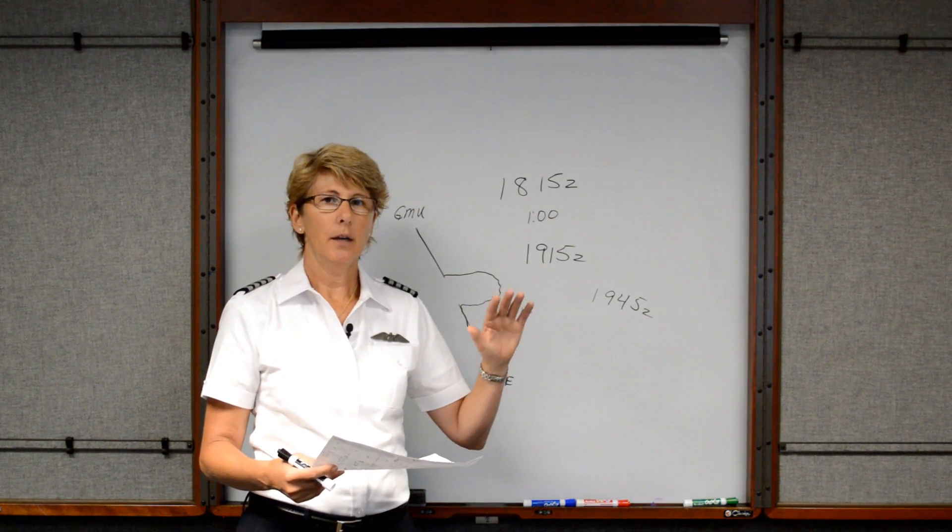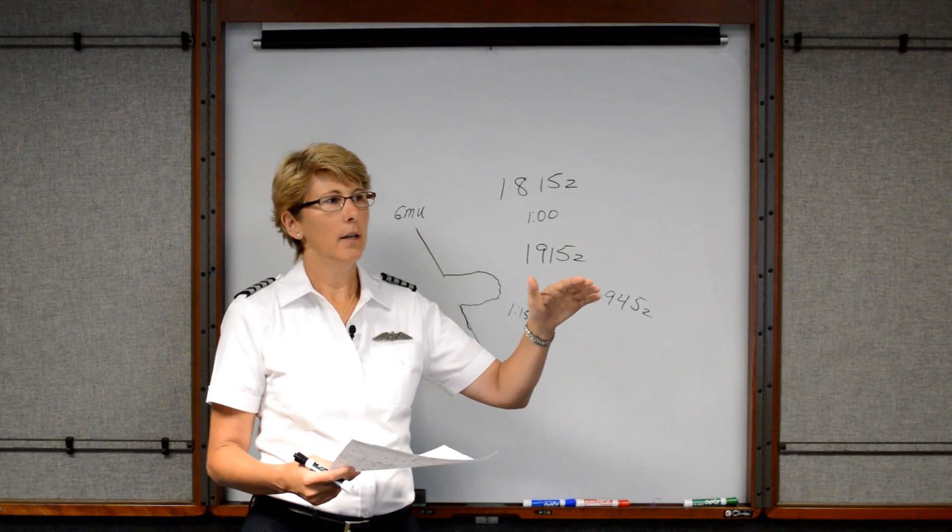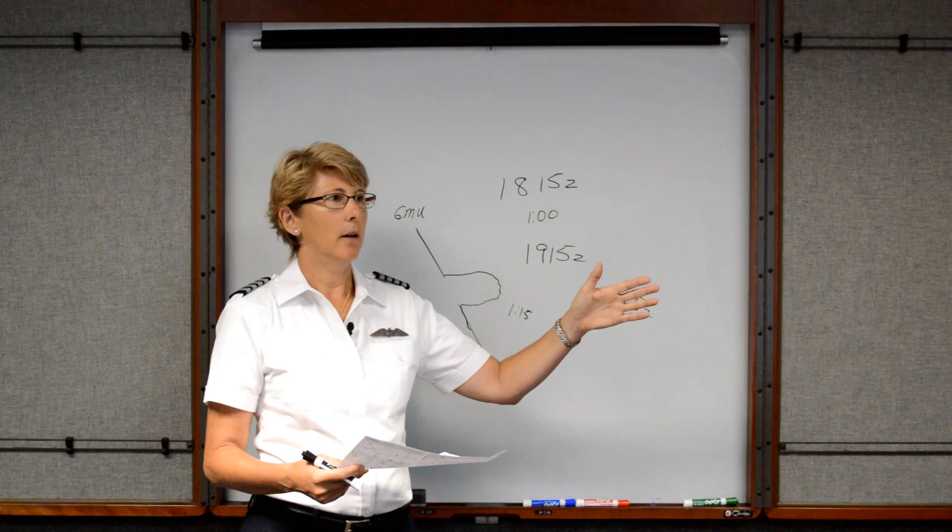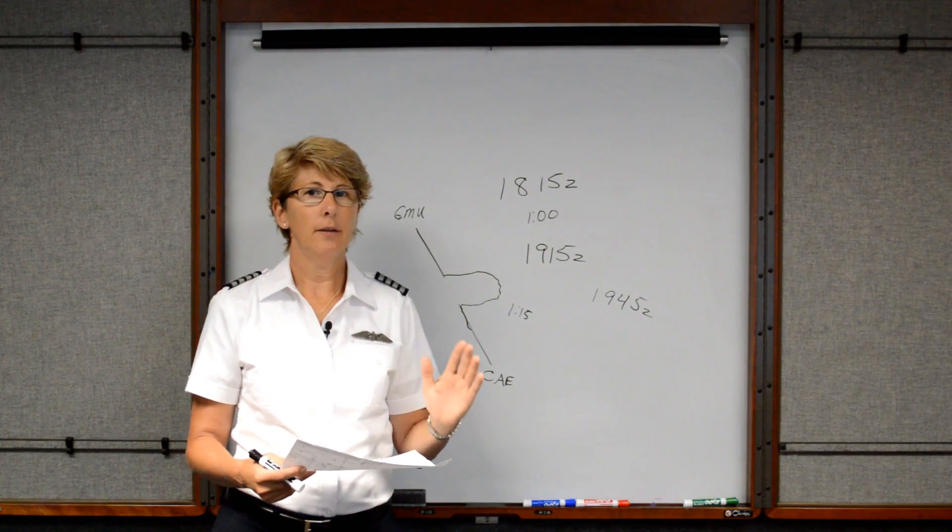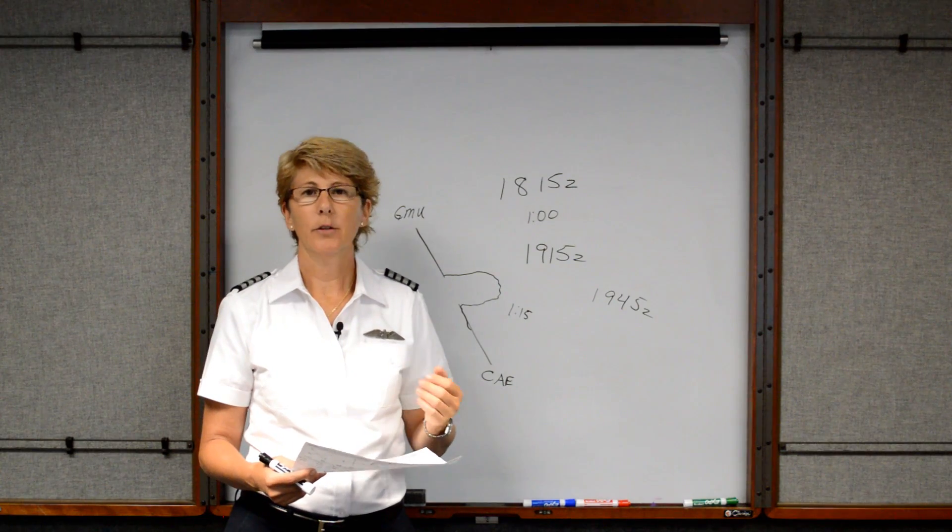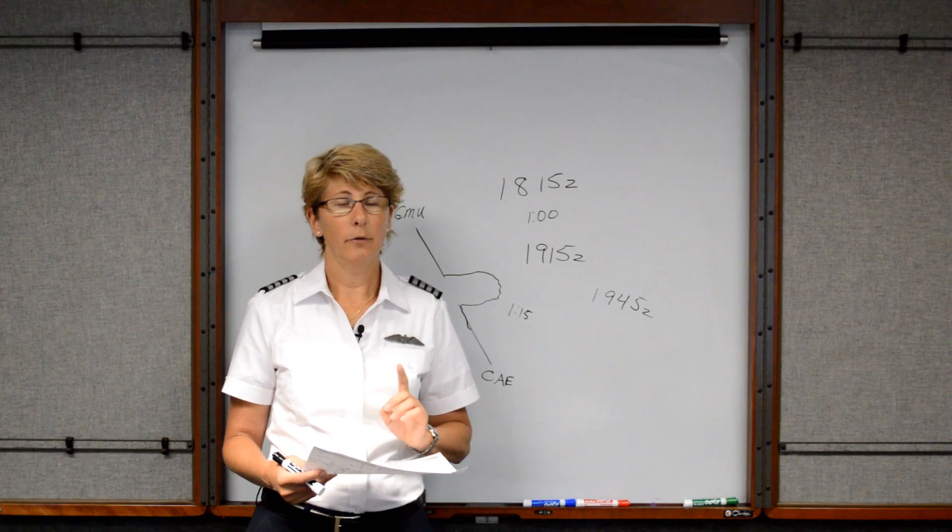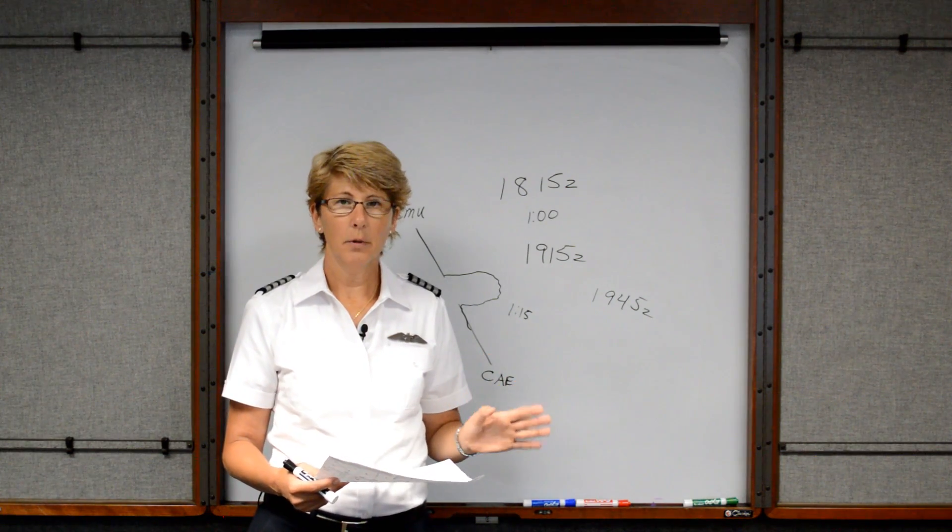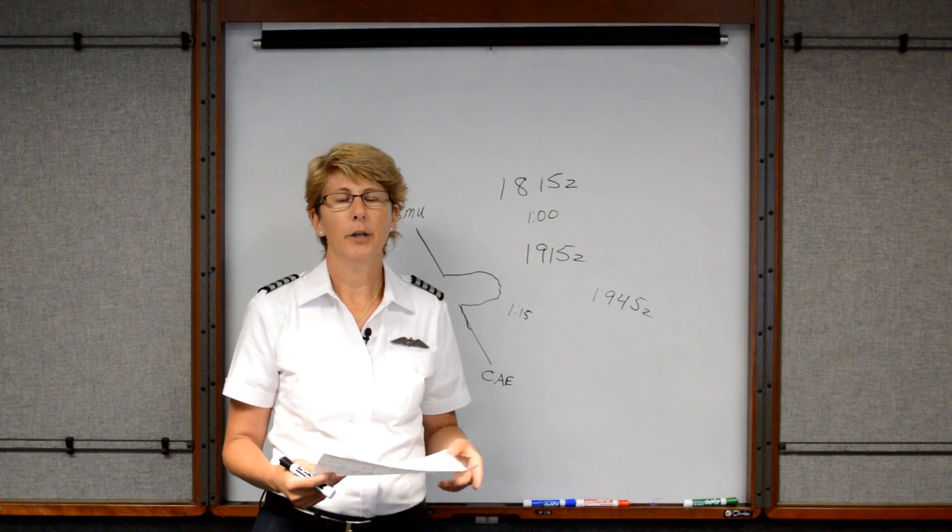Flight following is when the approach controllers watch us fly along and they can give us advice on diverting around weather or maybe they see terrain or a TV antenna or other traffic. They can help us out and watch us fly along. Keep in mind as VFR traffic, it's not their responsibility. They only help us if they have time, which usually they do a pretty good job of that.